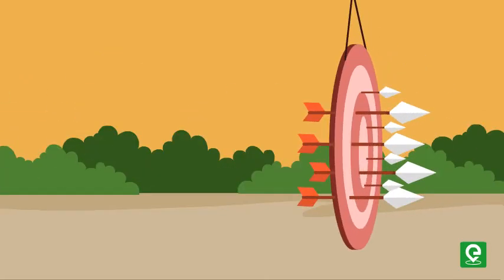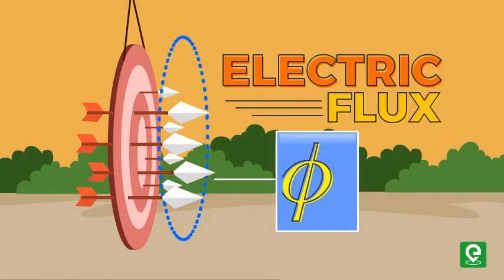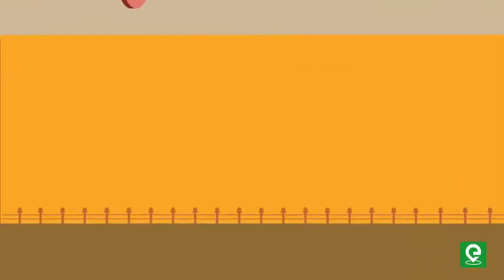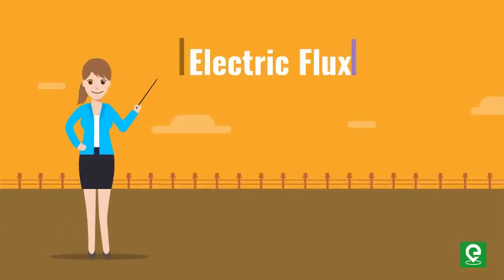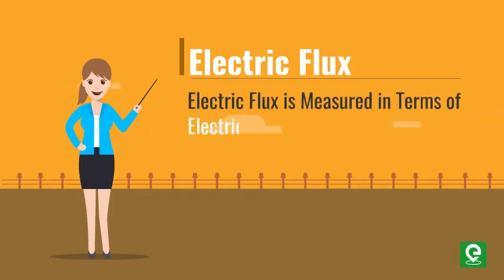A group of electric lines of force passing through a given surface is called electric flux. It is noted by the symbol Phi. Electric flux is measured in terms of electric field strength in the region.